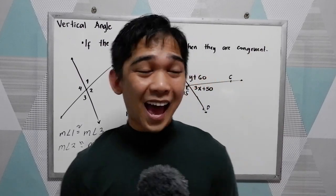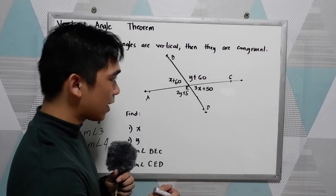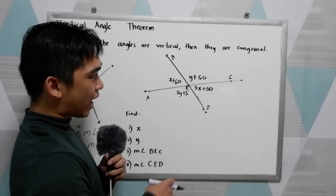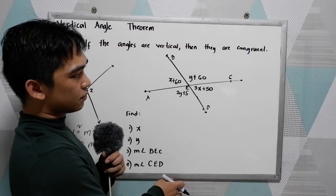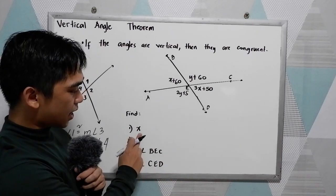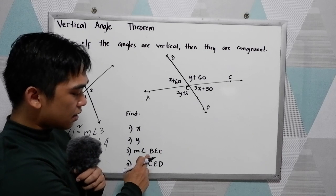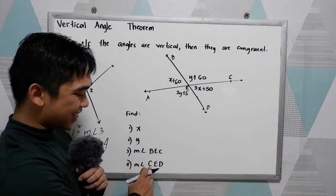To better understand, let's have this problem. We have two lines intersecting vertically. We're going to find x, y, measure angle BEC, and measure angle CED.